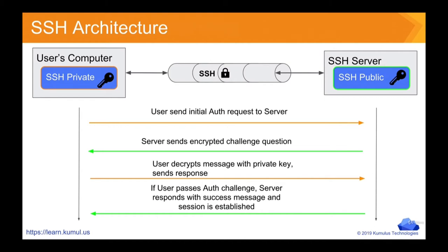The way you will get access is that you initially send a request to the server using a little SSH command. This will initiate an SSH connection with that remote server. Based on the username, the server is going to send a challenge question back to your computer. Using the SSH private key, your computer will decrypt the message and send a response back. If that is the correct response — and it will only be correct if you have the private key that pairs correctly with that public key — the SSH server will say you have passed authentication, sends a success message back, and your secure session will commence.